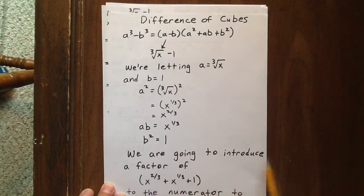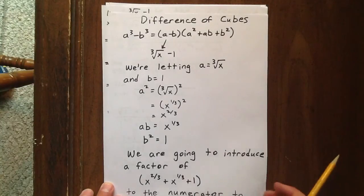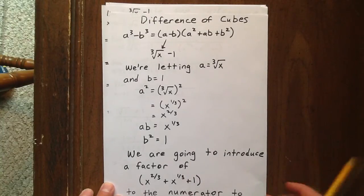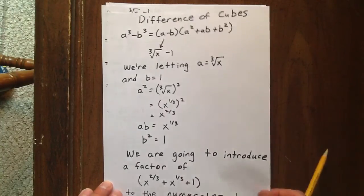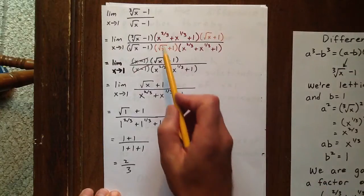So we're going to introduce a factor of x to the two-thirds plus x to the one-third plus 1 to the numerator to complete the difference of cubes, and to the denominator as well.